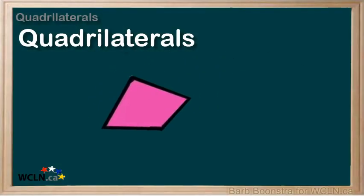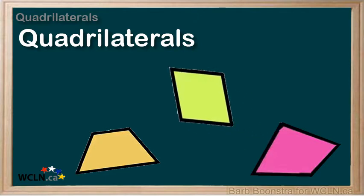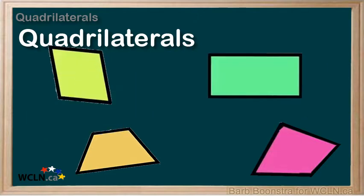A quadrilateral is defined as a closed, two-dimensional shape that has four straight sides.